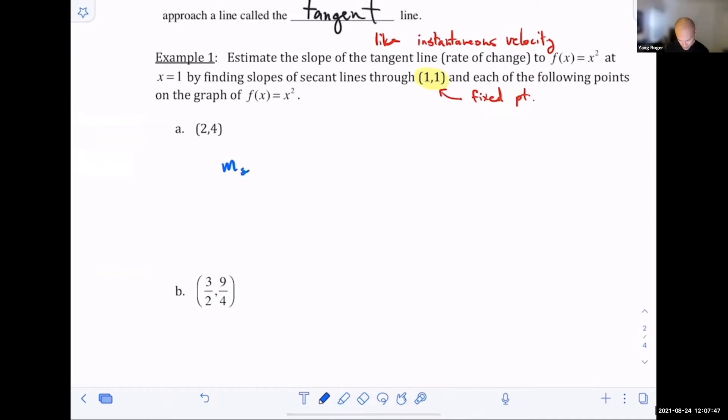The slope of the secant line is going to be the change in y values over the change in x values. My y value is four, my second y value is one, my x value is two, my second x value is one. I get three over two, or three over one, which is three. Any questions? It's pretty straightforward, right?